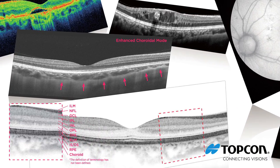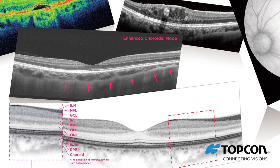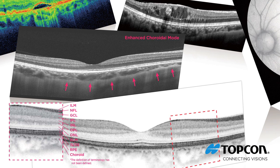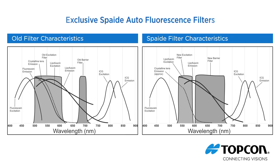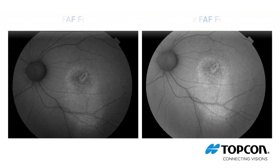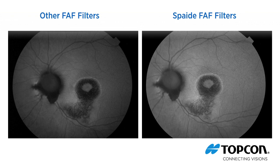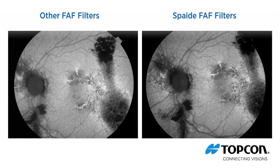Enhanced choroidal mode can be automatically selected as a capture icon, making it easy for your technician to take high-quality choroidal images every time. The 3D OCT 2000 FA Plus includes the TopCon exclusive SPADE autofluorescence filters. These patented protected filters produce superior quality images and require 40% less light than other FAF filters.